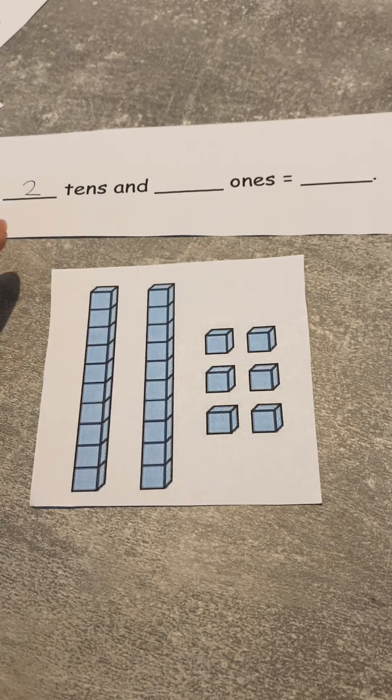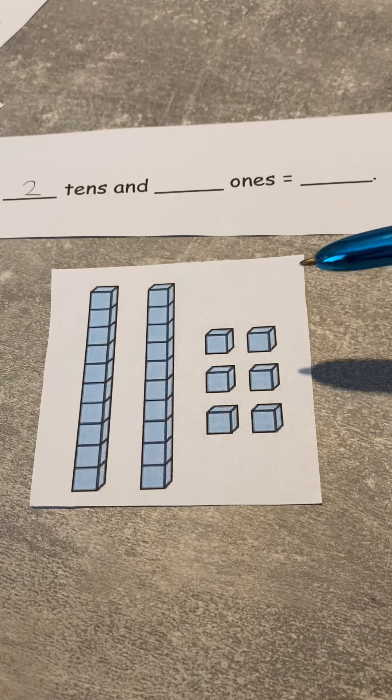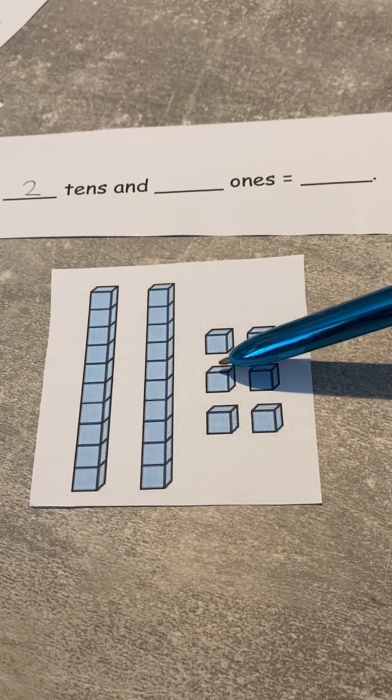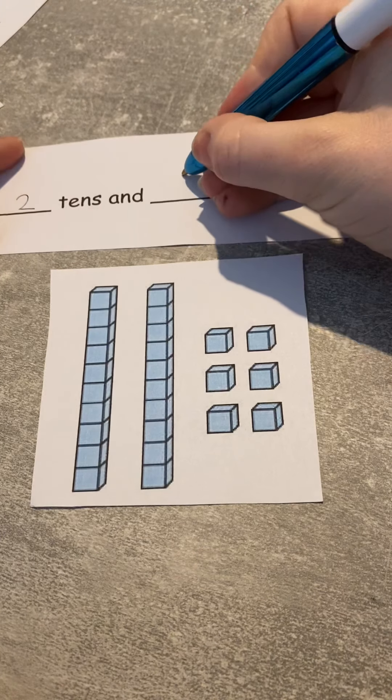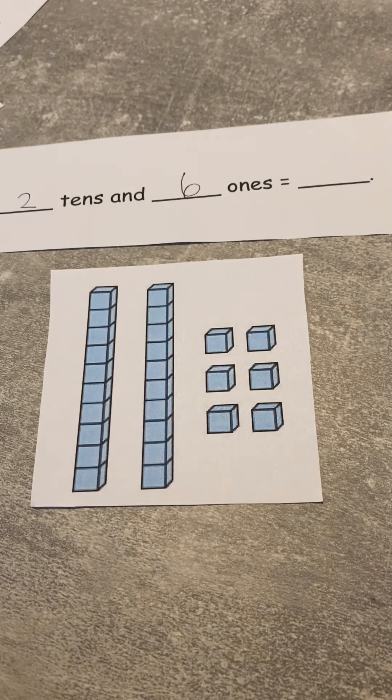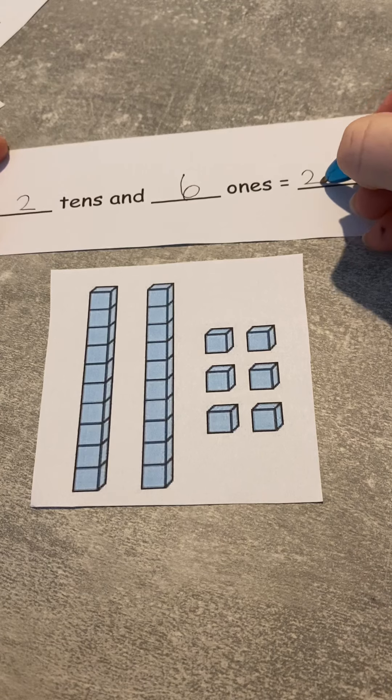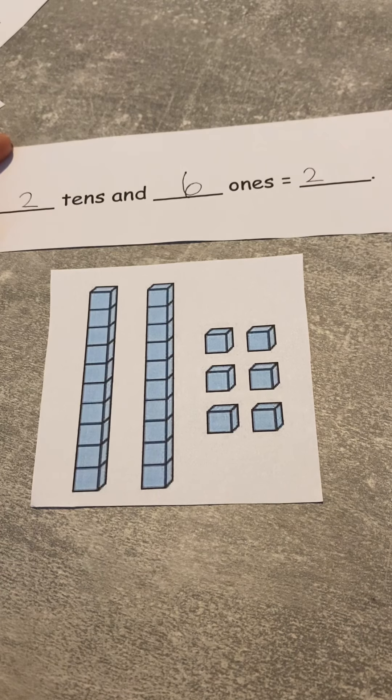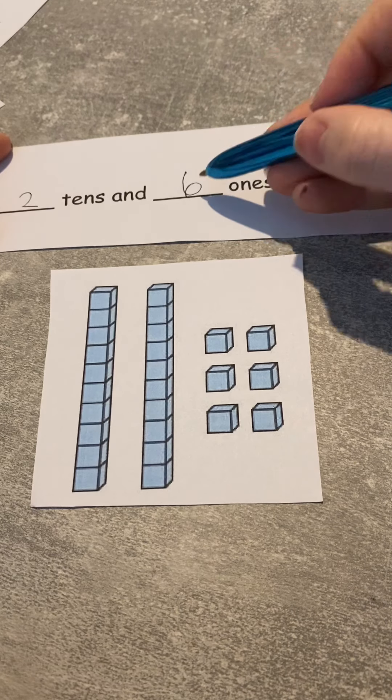Now how many ones have I got? One, two, three, four, five, six. Brilliant! So I've got two tens and six ones, and that equals... So I'll put the two first because that's my ten, and the ten comes first. So two first, and then I put the one next, which is six.